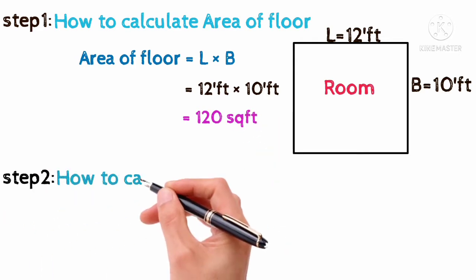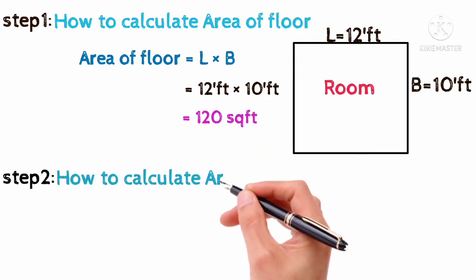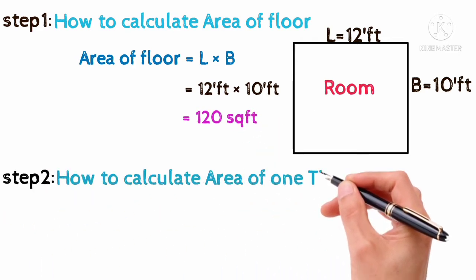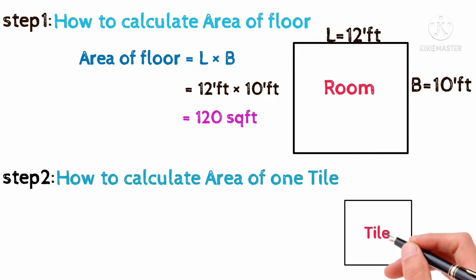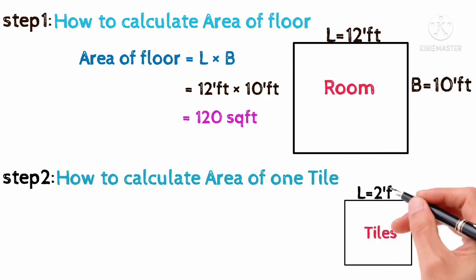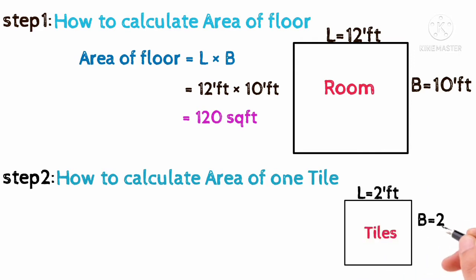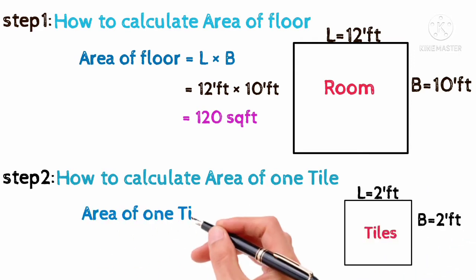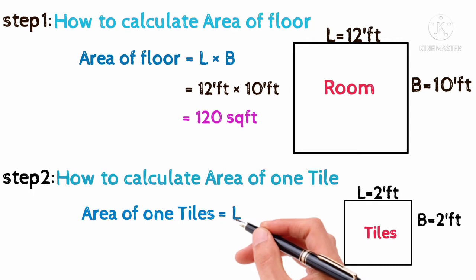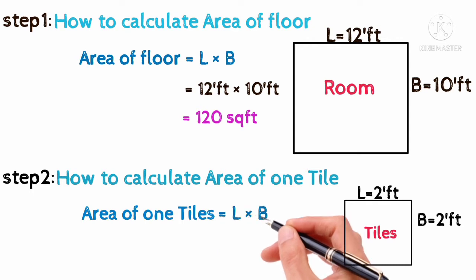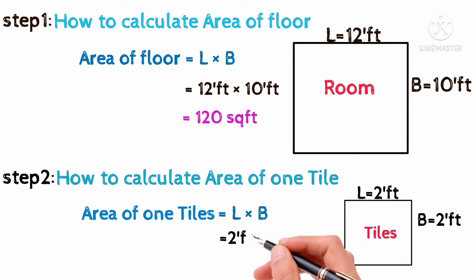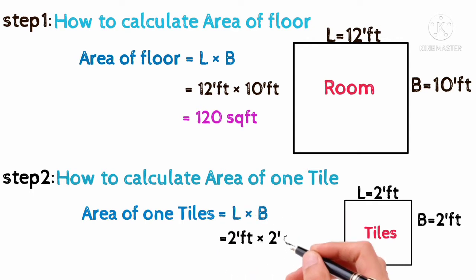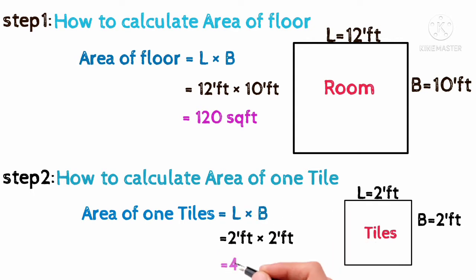Step 2: How to calculate the area of one tile. Tile length equals 2 feet, breadth equals 2 feet. Area of one tile equals length into breadth, equals 2 feet into 2 feet, equals 4 square feet.